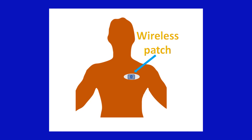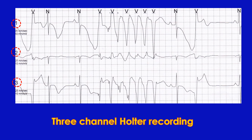Another related investigation is ECG monitoring using wireless patches which transmit ECG using mobile network to a central monitoring station. Experts in the monitoring center alert us to any significant rhythm disorders. The number of electrodes used for Holter depends on how many channels of ECG you need to record.